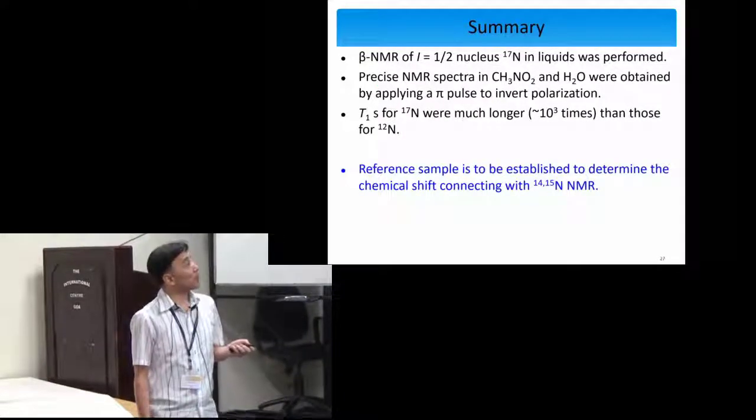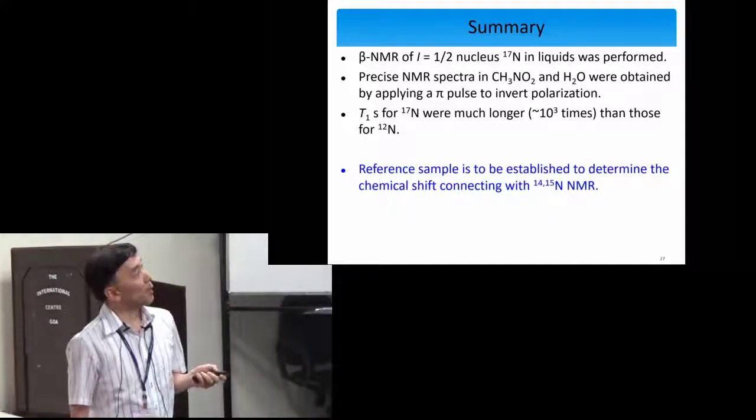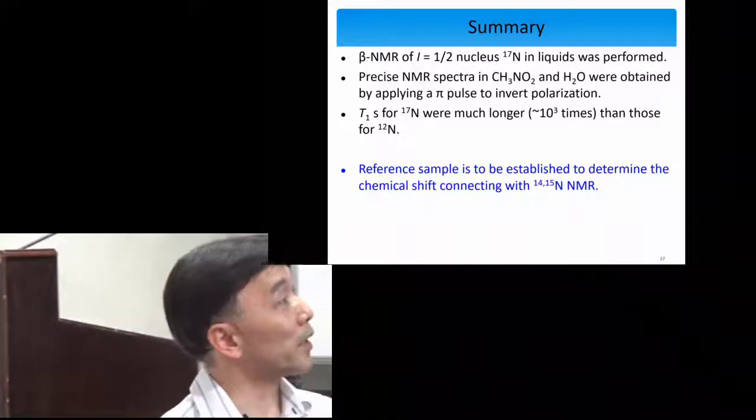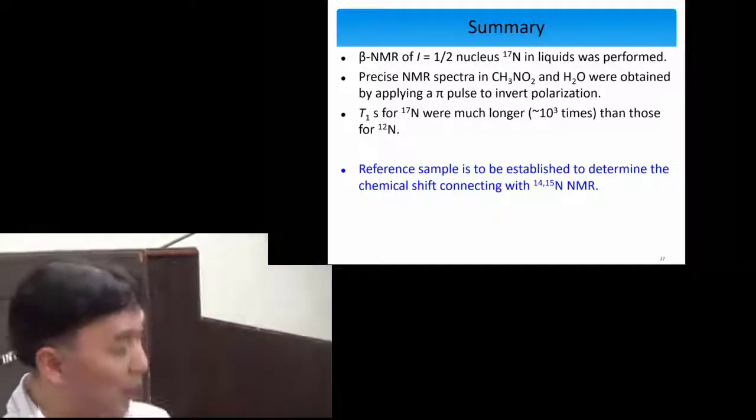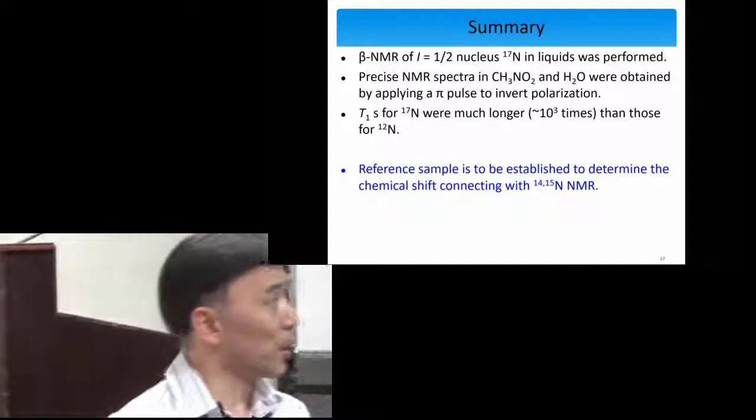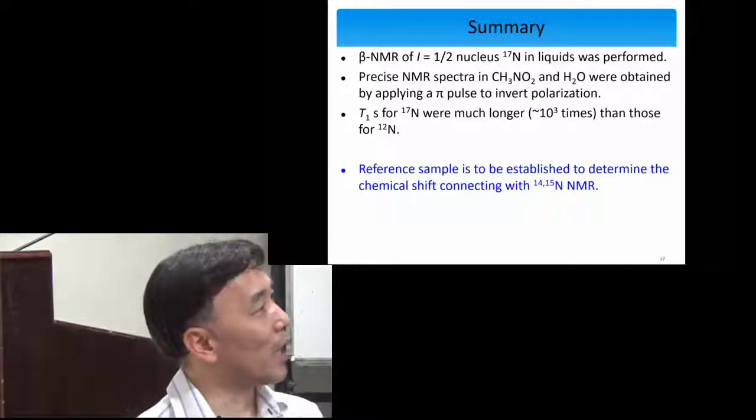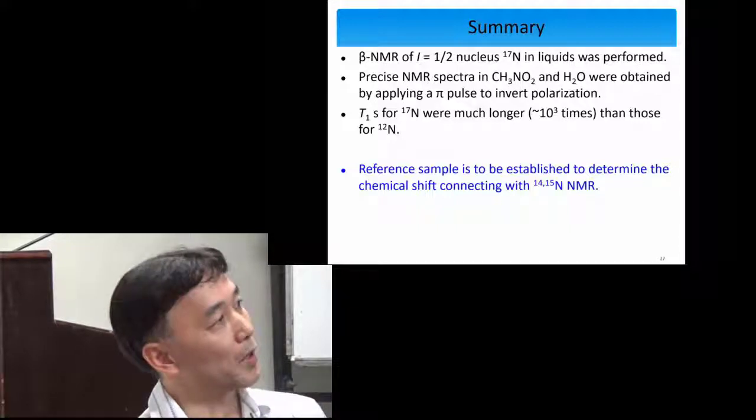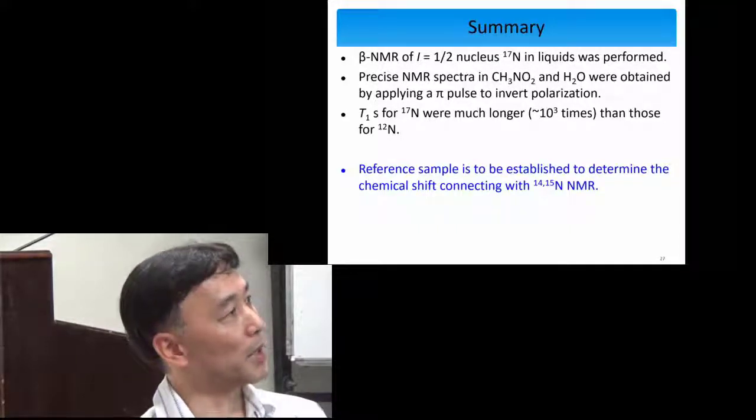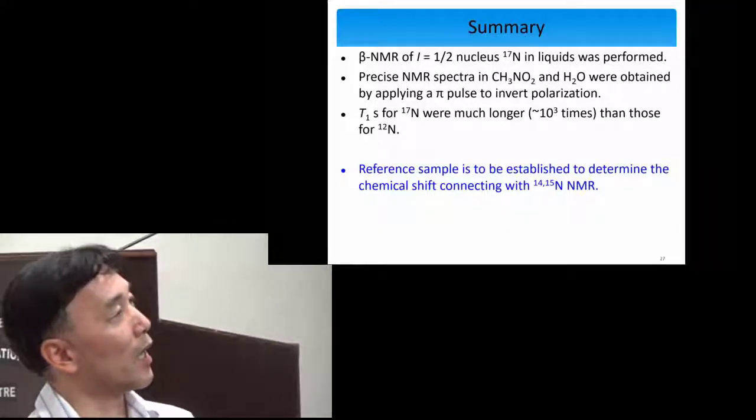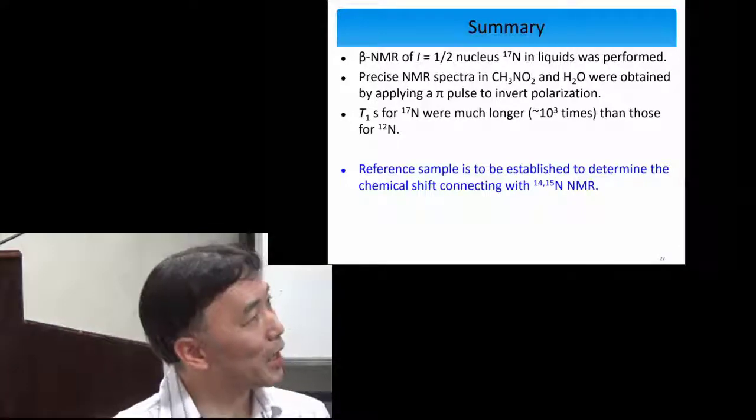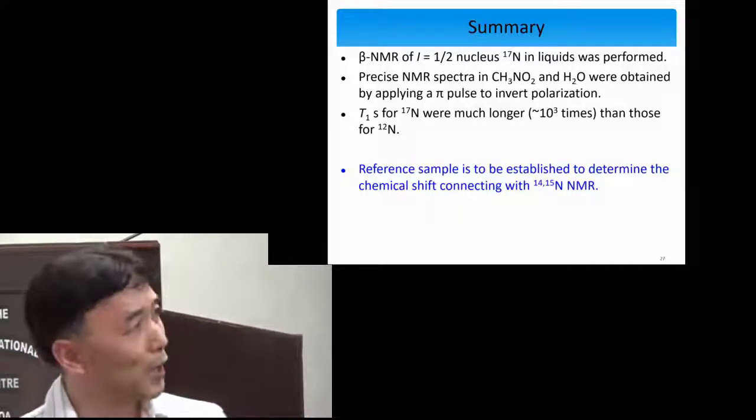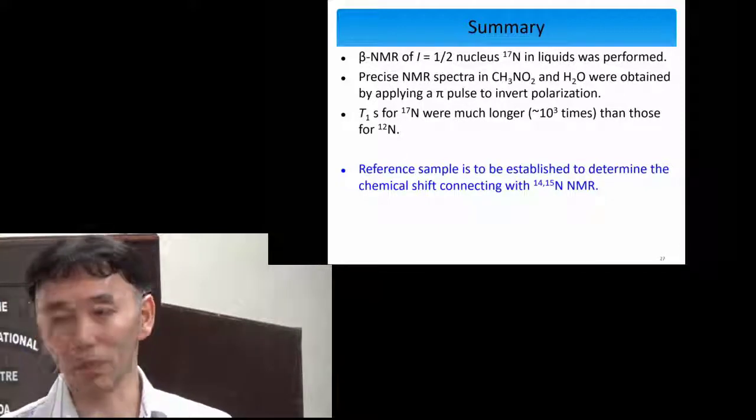This is summary. We could successfully observe the beta-NMR signal in liquid samples using nitrogen-17. We are now considering and planning to determine the absolute value of chemical shift and connecting with the stable NMR, nitrogen-14 or 15, using the nitrogen compounds, which is surely substitute samples. So we are now looking for that kind of samples.